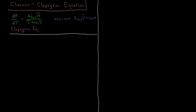Our previously derived Clapeyron equation shows that the change of pressure with respect to temperature along a coexistence curve is equal to the molar transition enthalpy divided by the temperature times the molar transition volume between the two given phases — whether that be solid-liquid, liquid-gas, or solid-gas. The transition volume is the difference between the molar volumes of the two phases, and the transition enthalpy is the heat required to go from one phase to another. This assumes that the transition volume is constant as a function of both pressure and temperature along the phase diagram.